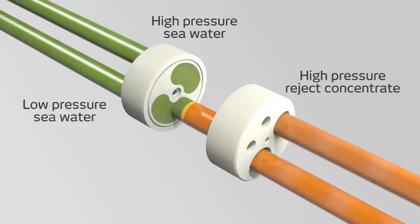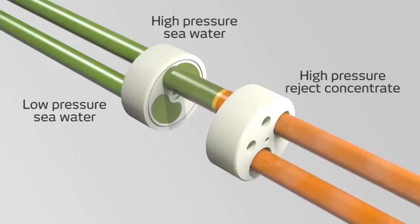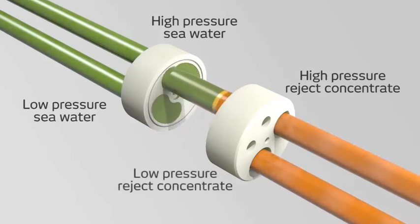This pressurized seawater now goes back into the system and joins the stream from the high-pressure pump. Any remaining concentrate exits the rotor at a low pressure and is then pushed out by fresh seawater.